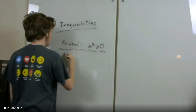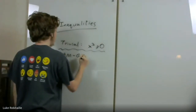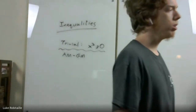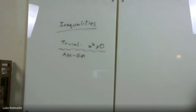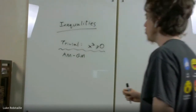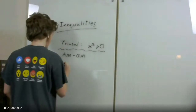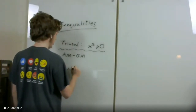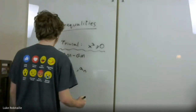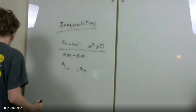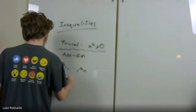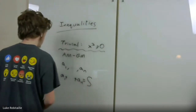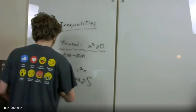The next thing is AM-GM. If you have some non-negative real numbers A1 through AN, and suppose you have fixed their sum — say it's S — and you want to maximize their product.